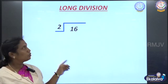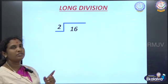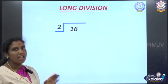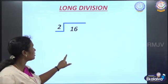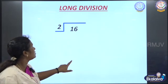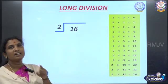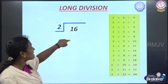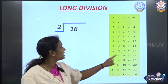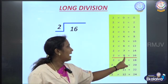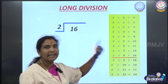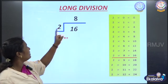Let us see how to do the sum. Now we are going to divide 16 by 2. To do division sums, we have to know the multiplication table. So for doing 16 by 2, we have to write the 2 times table. Now we are going to find how many times 2 will come in 16. Check where 16 is in the table.